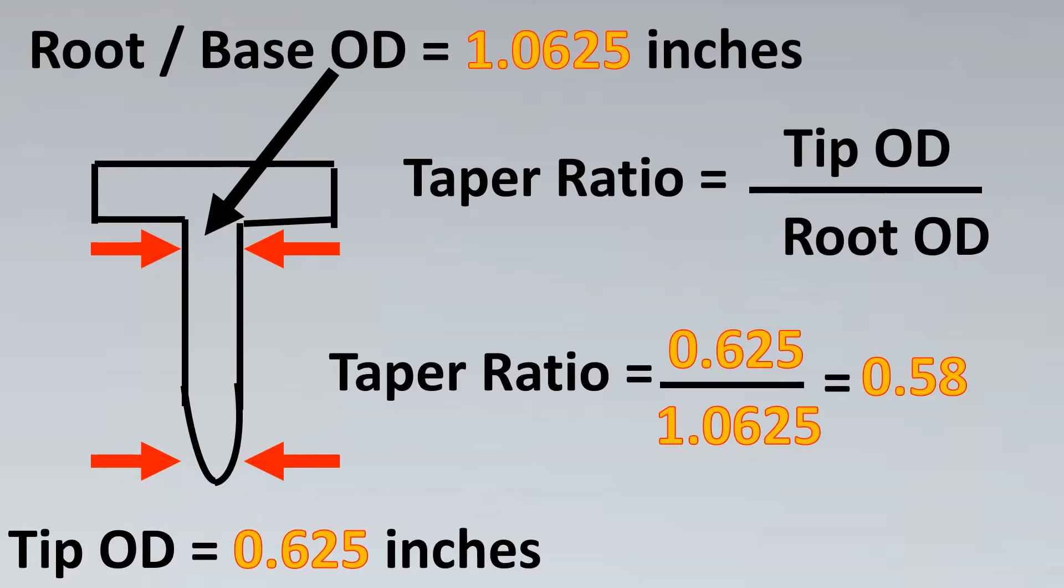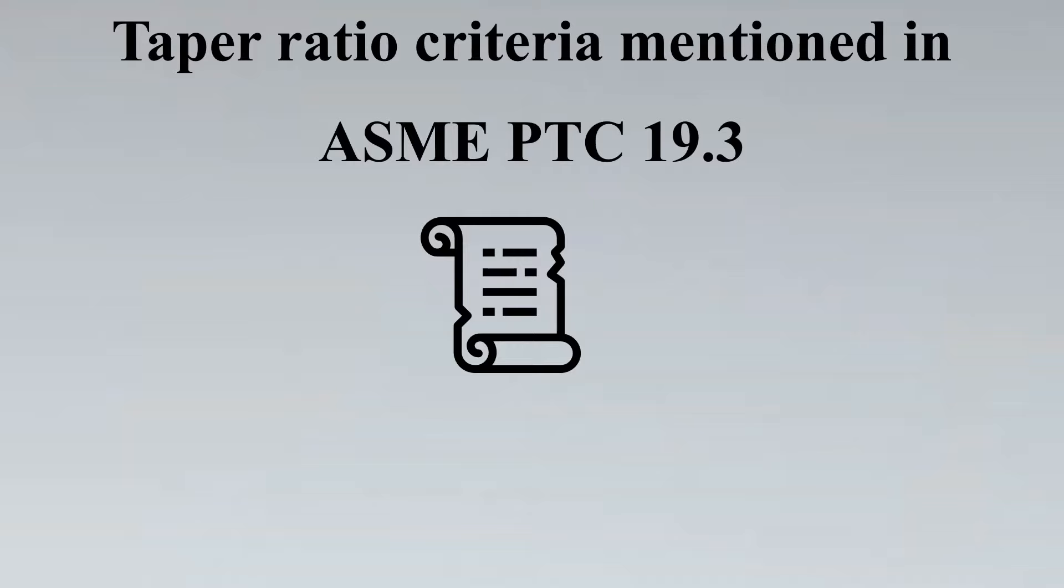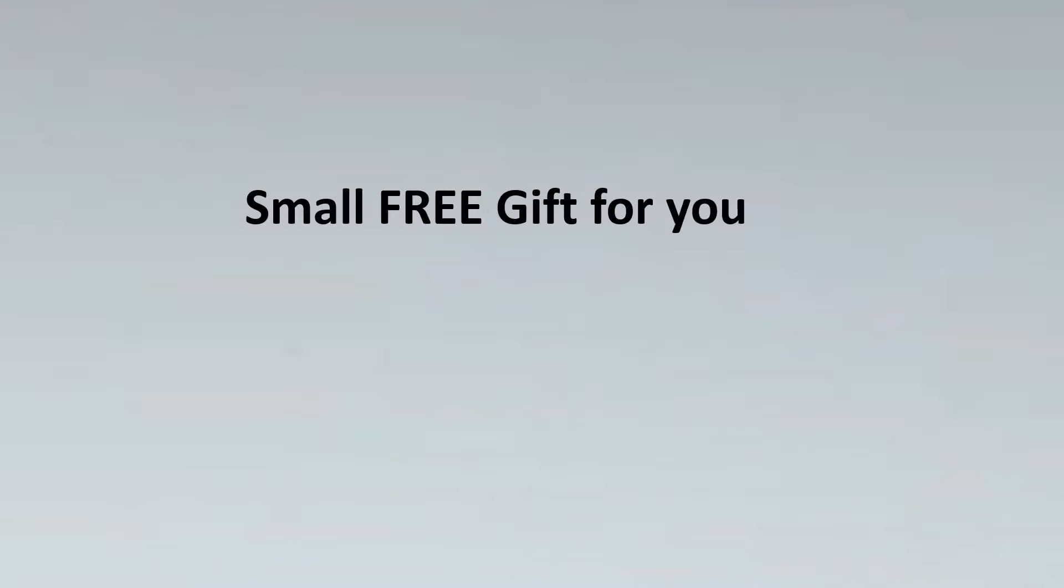And the ratio comes out to be exactly 0.58. So this is exactly the lower limit of the taper ratio. Now you can play up till one, the upper limit of taper ratio and try to adjust your thermowell in such a way that it passes wake frequency calculations. So in conclusion, remember that the taper ratio criteria mentioned in ASME PTC 19.3 is that the taper ratio must be between 0.58 to 1.